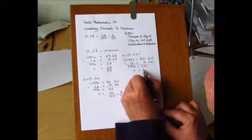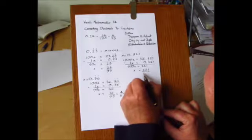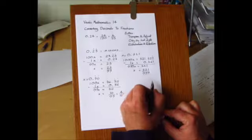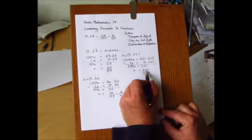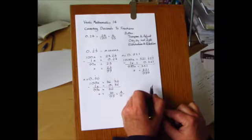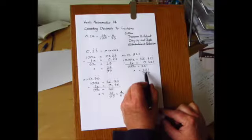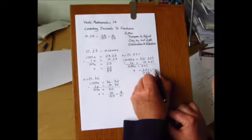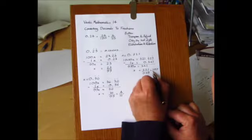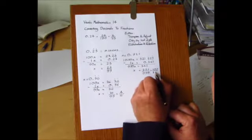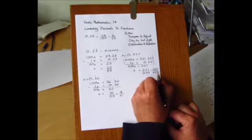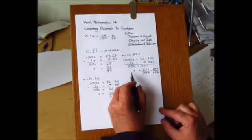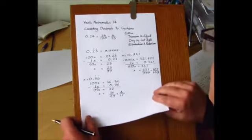And then we just adjust this to make X the subject, and we have 321 over 999. And of course this can be—looking at these two numbers, they are both divisible by 3—so we could do that. That's 3 into that is 107, and 3 into 999 is 333.